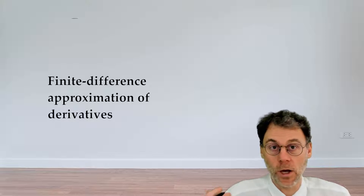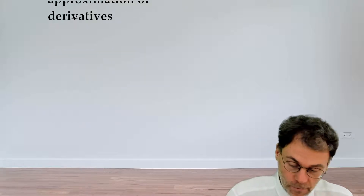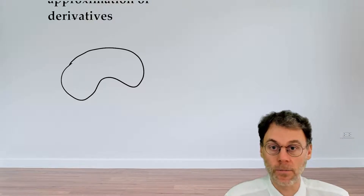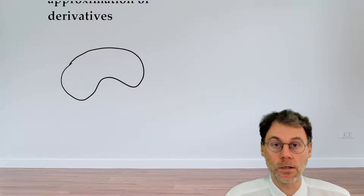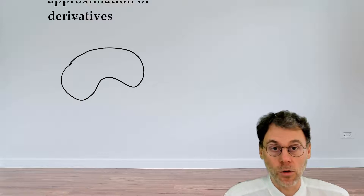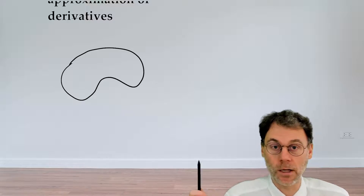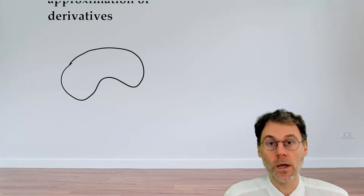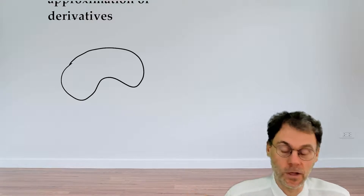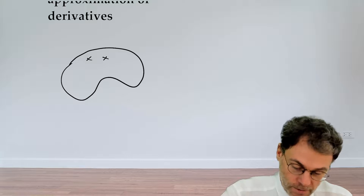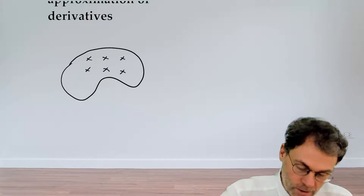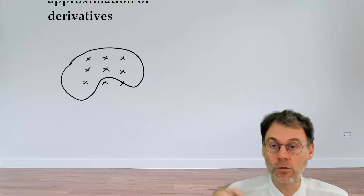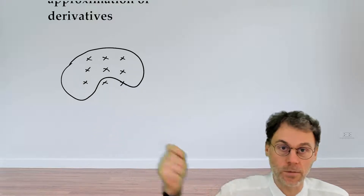Say you want to solve a differential equation in a very complicated geometry — for example, this potato-shaped waveguide — and you want to calculate the fields using Maxwell's equations. Obviously in a complicated geometry like this it will not be possible to solve the equations analytically. So we don't calculate the fields everywhere in the continuous space. Rather, we're going to make a sacrifice and only calculate the fields at certain given points in space: at grid points or mesh points.